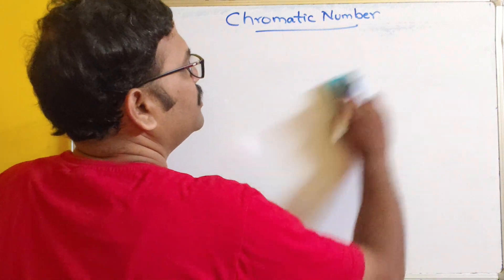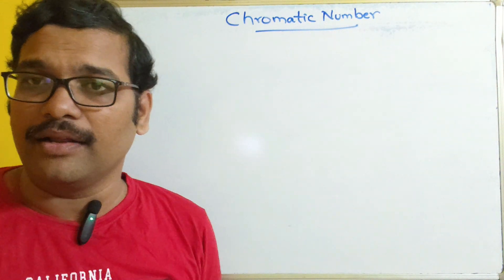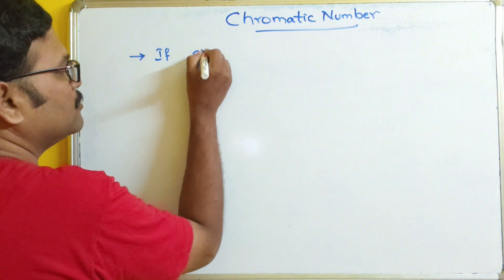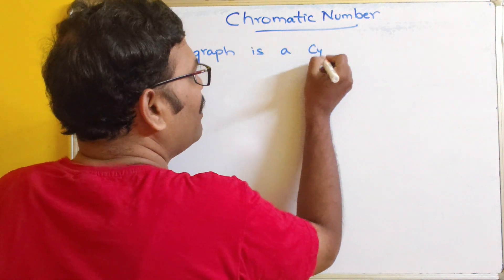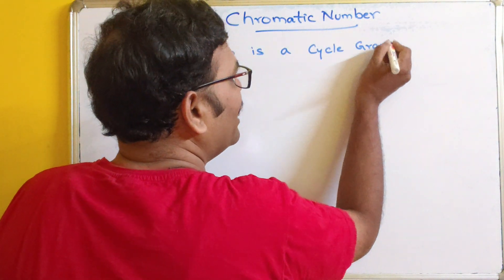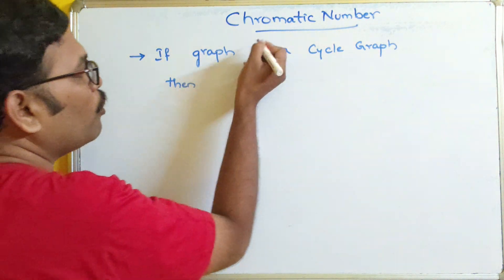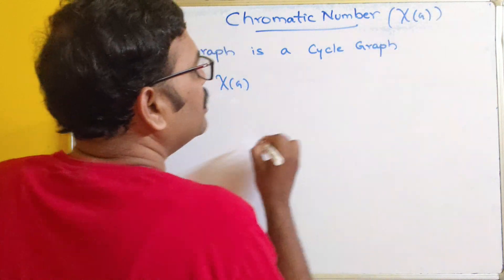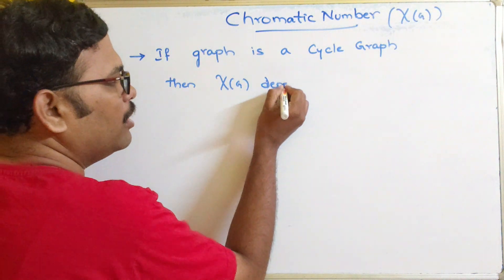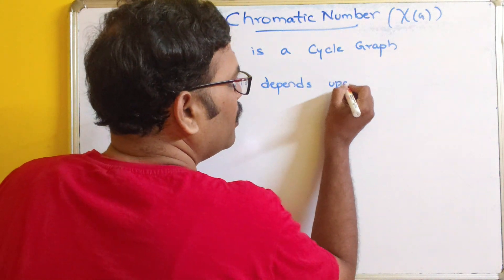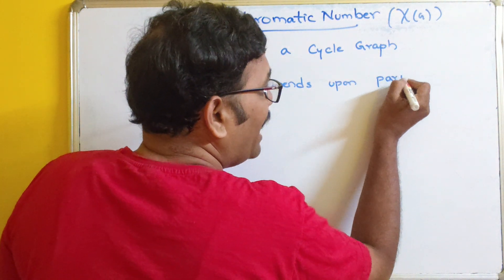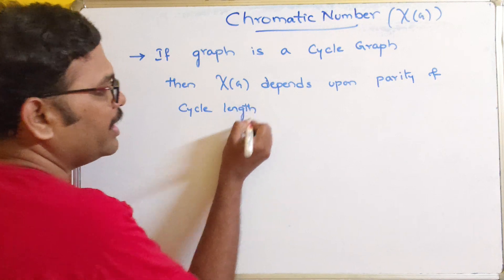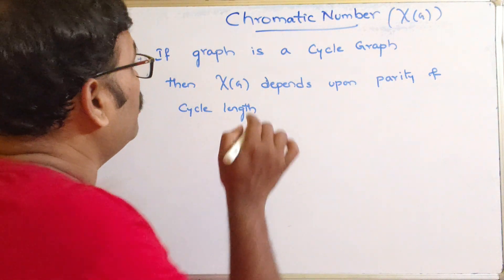There are a few properties to help find the chromatic number. First, if a graph is a cycle graph, then χ(G) depends upon the parity of the cycle length.